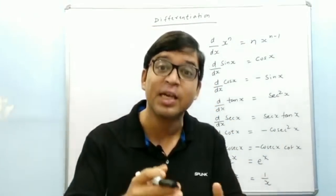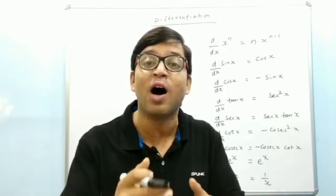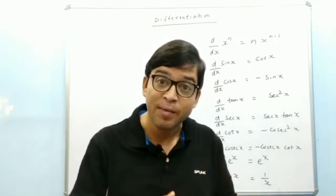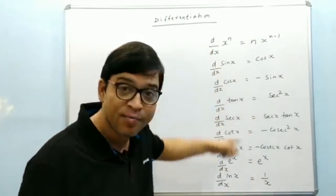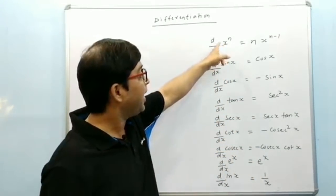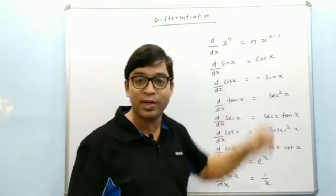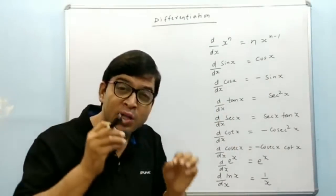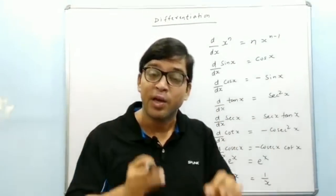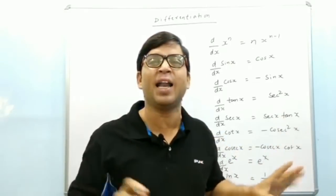In doing the differentiation of a composite function — that is not simple. Simple functions are like: if we have to differentiate x to the power n with respect to x, it is n into x to the power n minus 1. The key is hidden here — if you understand the formula well, your job is done.